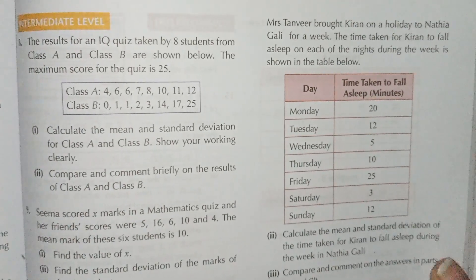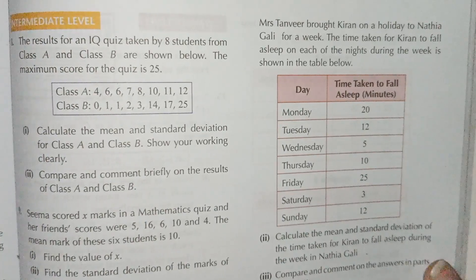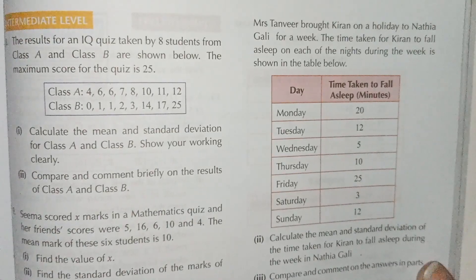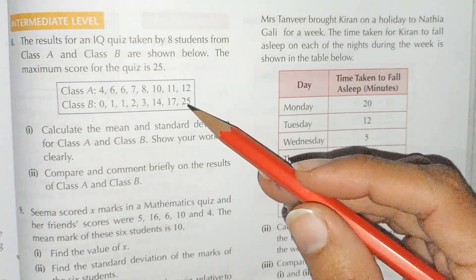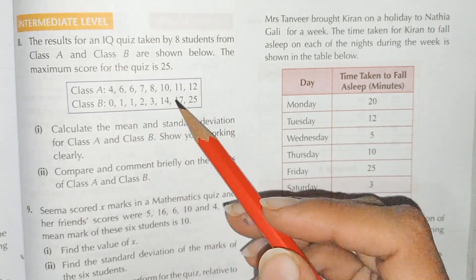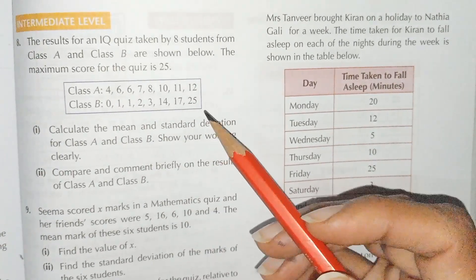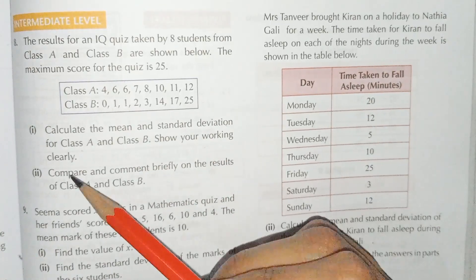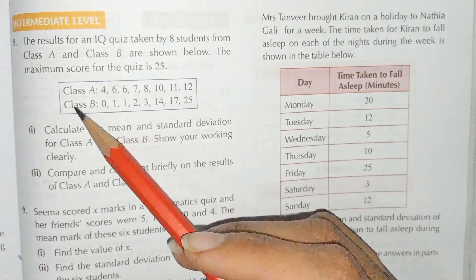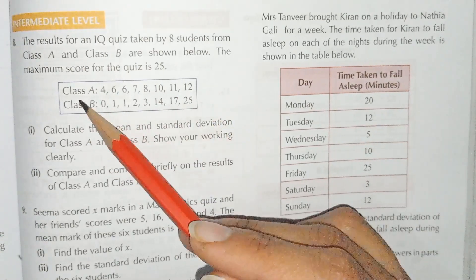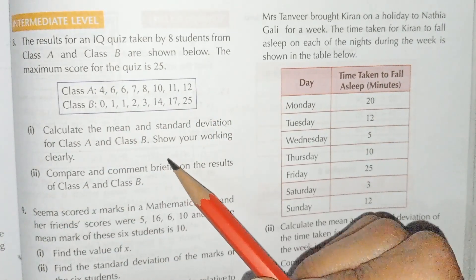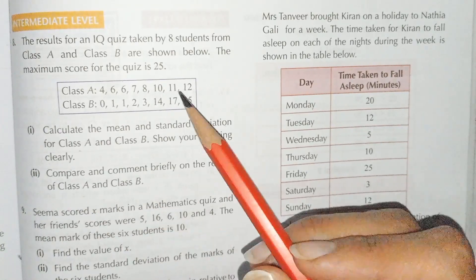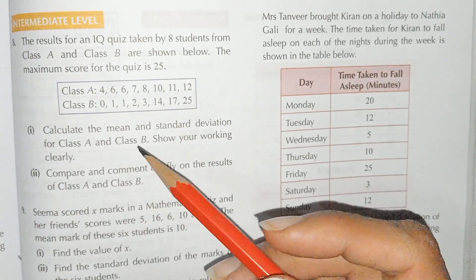Question number 8: the results for an IQ quiz taken by 8 students from Class A and Class B are shown below. The maximum score for the quiz is 25. We have to calculate the mean and standard deviation for Class A and Class B, showing working clearly. In the second part, we have to compare and comment briefly on the results of Class A and B.